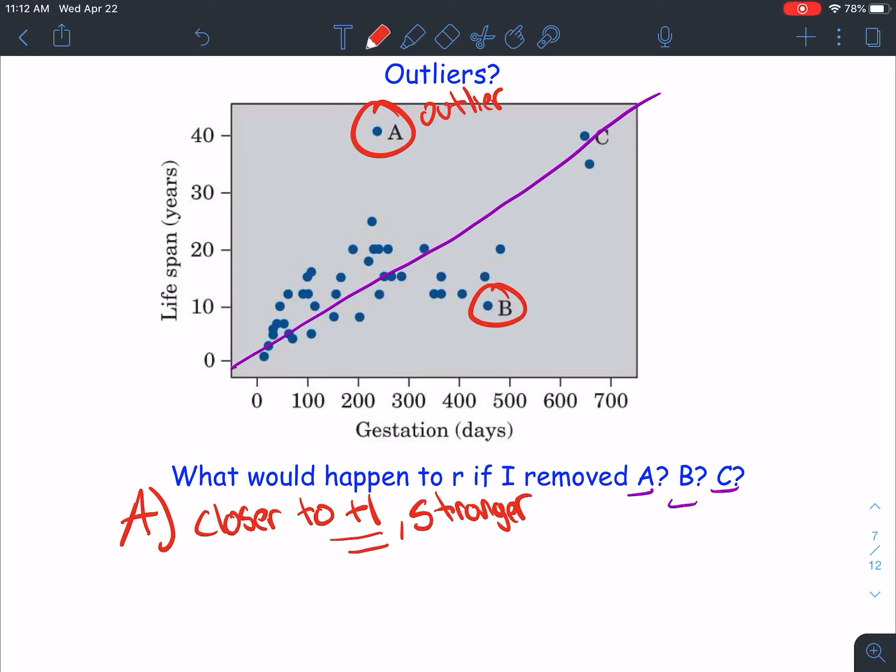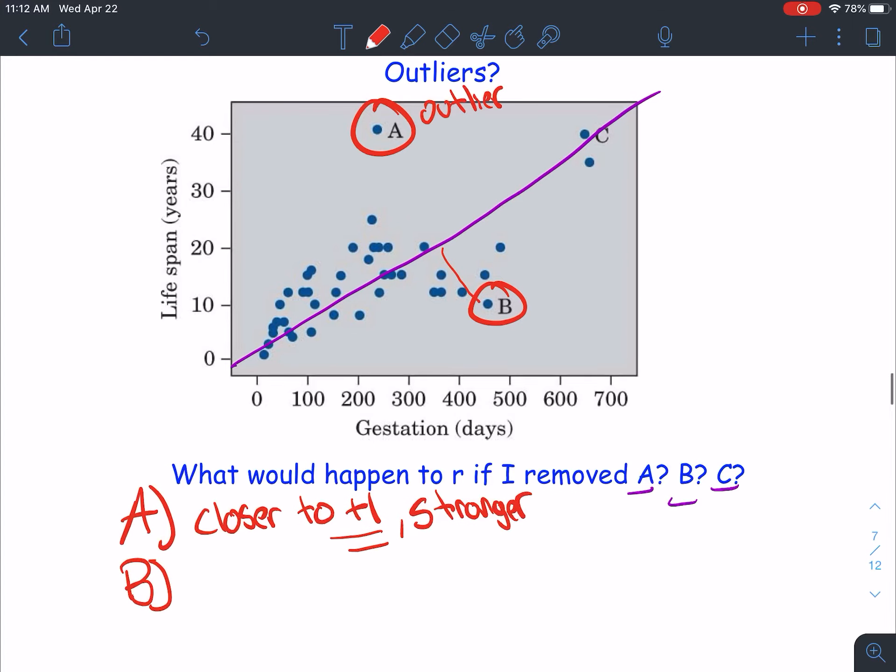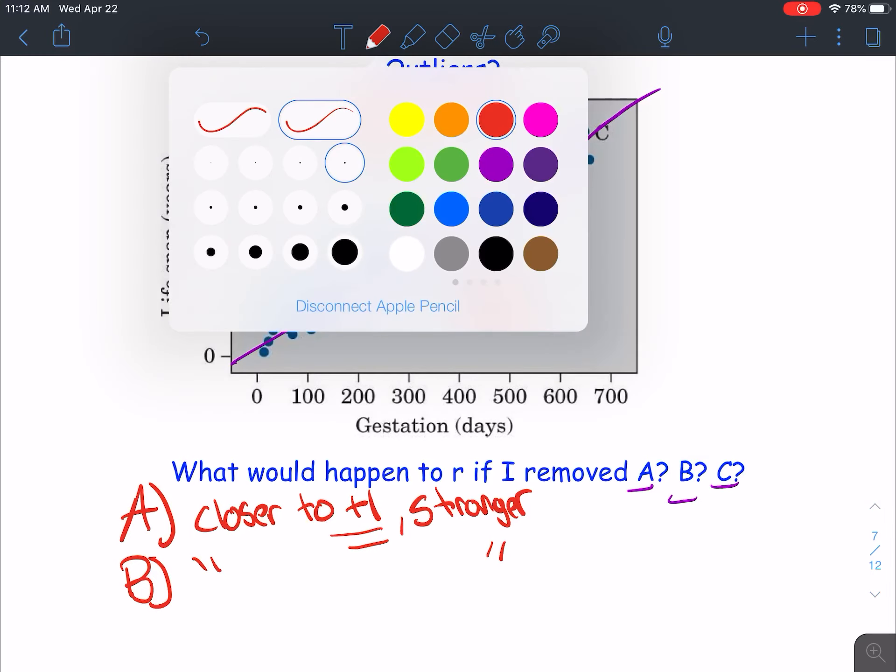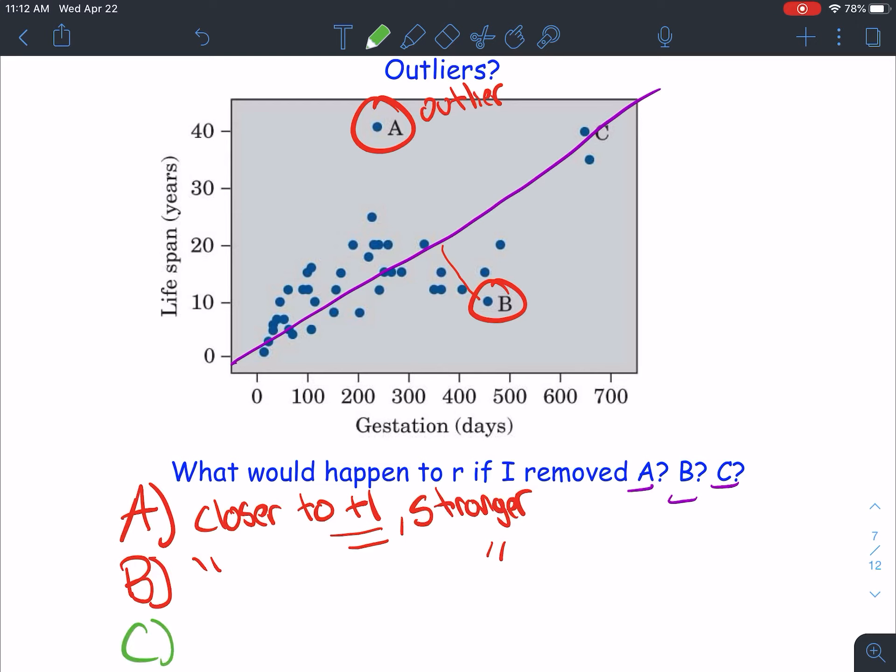Similar idea with B, so I'm going to kind of combine these together. B is not quite as much as an outlier as A is, but it's still an outlier. And so that information would be true for this one as well. Now let's look at C. C is right on that line. And so if we are to remove a point that's in line with our data, it's actually going to get weaker, which in this case means closer to 0. Our R value is going to get closer to 0.